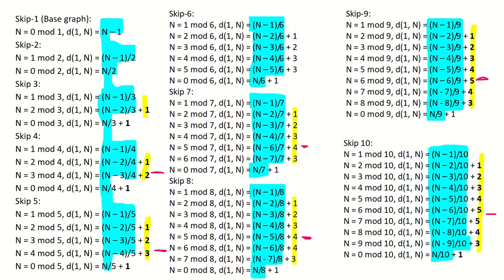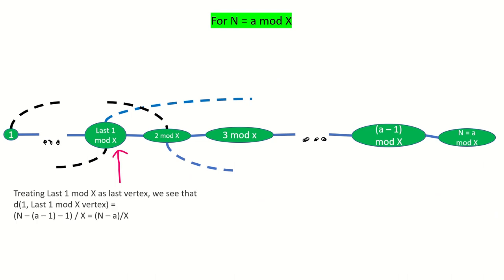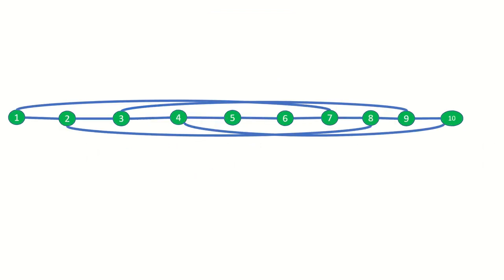Here's the intuition for why this is. In a skip x graph of size n where n is a mod x, you can always get to the last 1 mod x vertex in the graph in n minus a over x steps. Let's examine this in a skip 6 graph. In a skip 6 graph of size n we can always get to the last 1 mod 6 vertex in n minus a over x steps, or in this case one step.